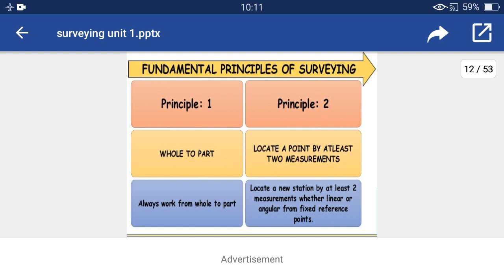Now we start with the fundamental principles of surveying. There are two basic principles of surveying. The first one is to work from whole to part, and the second one is to locate a point by at least two measurements. In surveying, we always work from whole to part and locate a new station or point by at least two measurements, whether linear or angular, from fixed reference points.